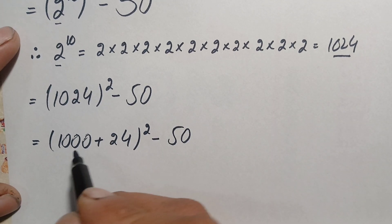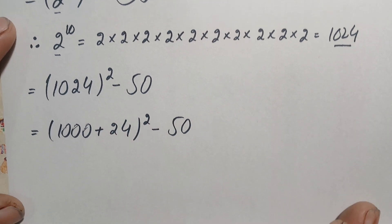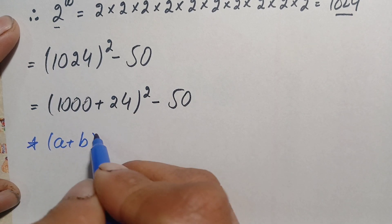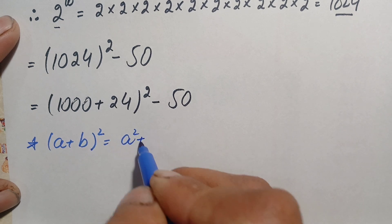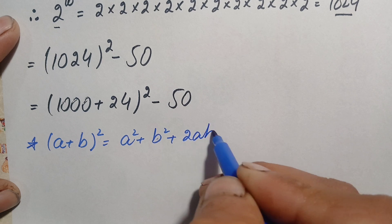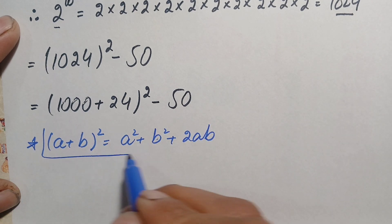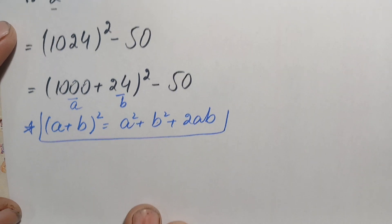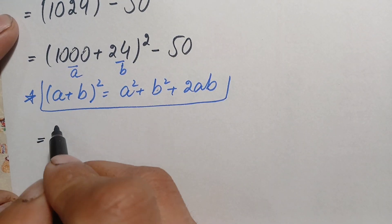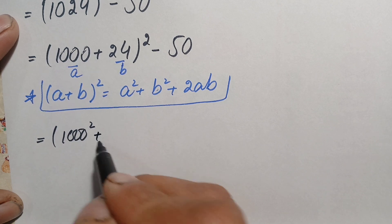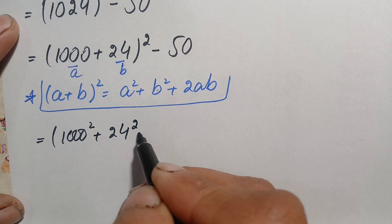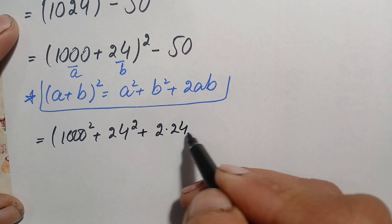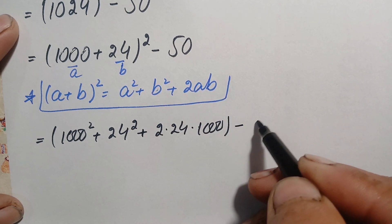Here we use the algebraic identity: (a + b)² = a² + b² + 2ab. Our a is 1000 and b is 24, so this becomes 1000 squared plus 24 squared plus 2 times 24 times 1000, minus 50.